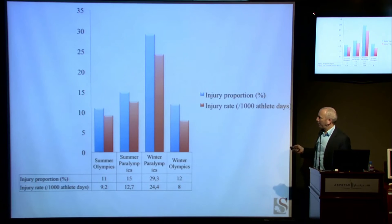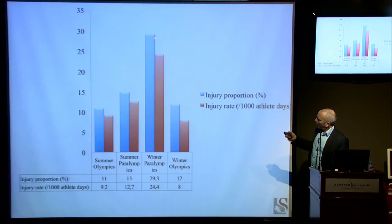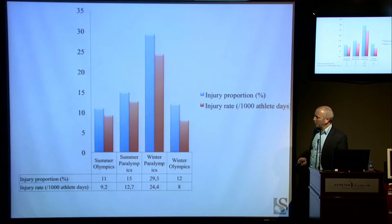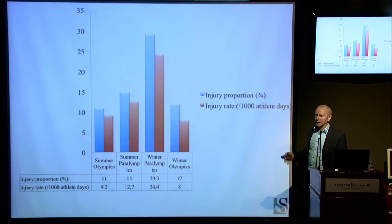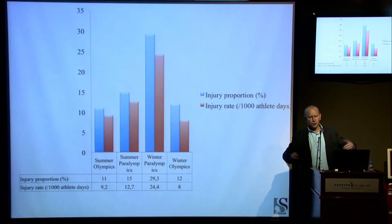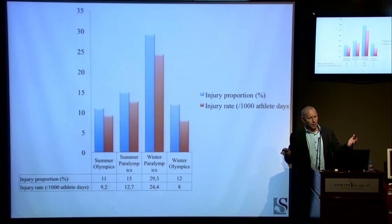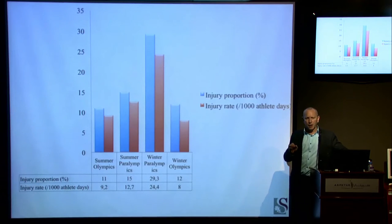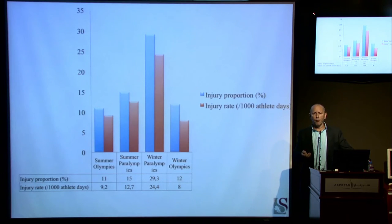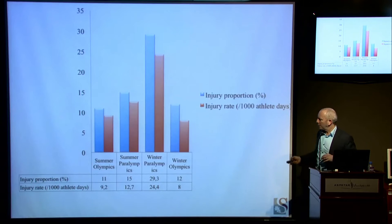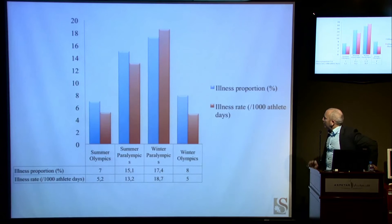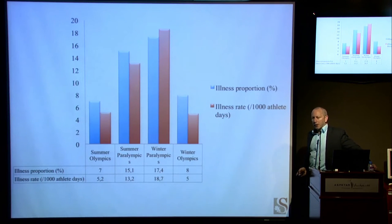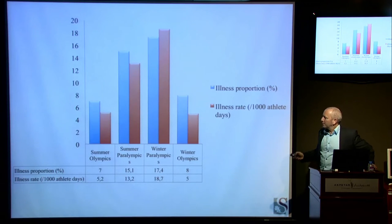One of two things could be happening here. Either this is a true scenario reflecting a true population, or the Olympic data is underrepresented — because data can't be over-entered into a web server. The Olympic study uses a paper-and-pen recording system, and forms aren't always filled in. So we must take this with a pinch of salt. But looking at the illness data, the illness proportion and illness rate show that Paralympic populations have much higher incidence proportions and incidence rates of illness.